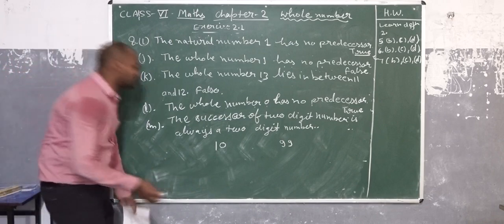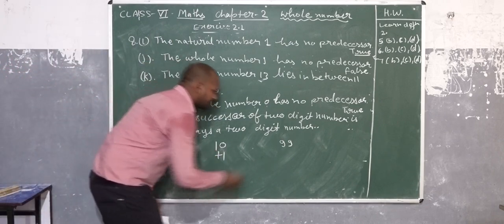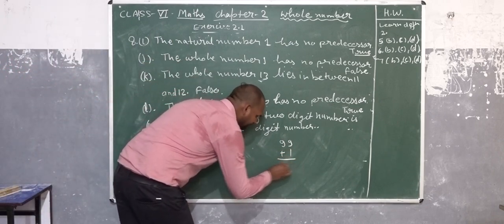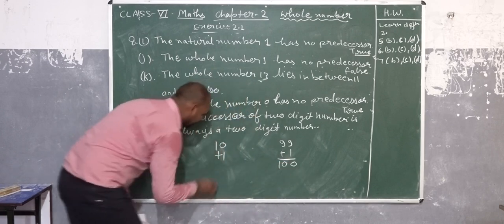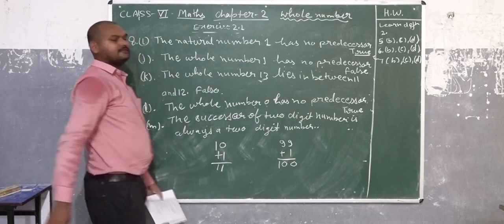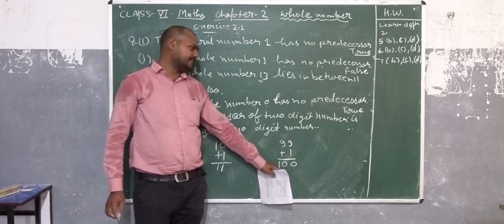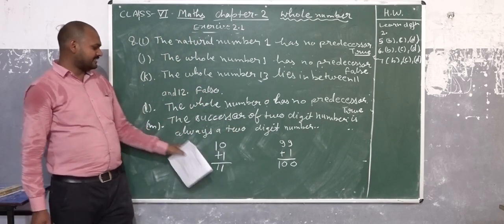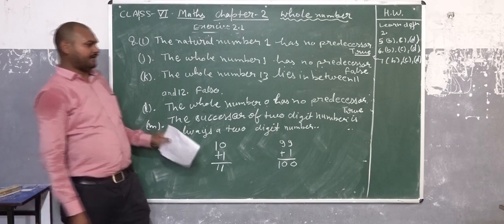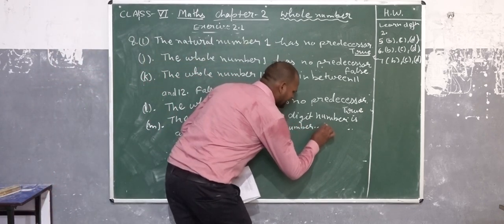Find the succession of 99, number plus 1, that is 100, that is 11. The succession of 2-digit number 99 is 100, is 3-digit number. So the statement is false.